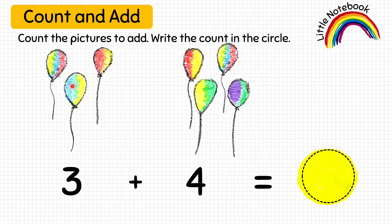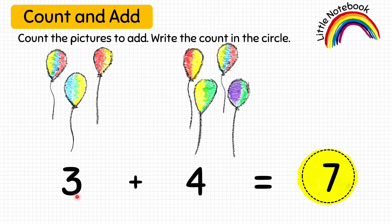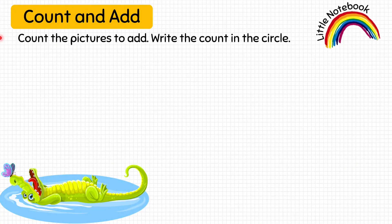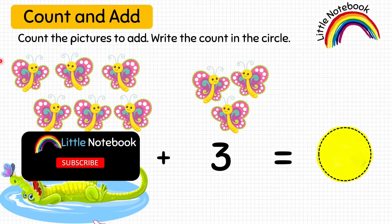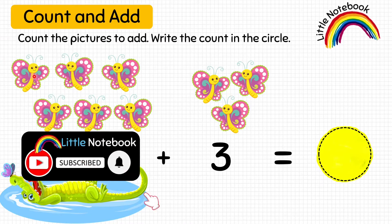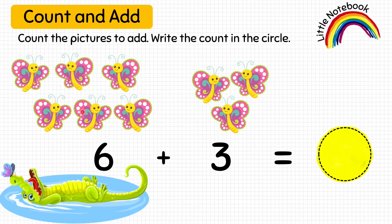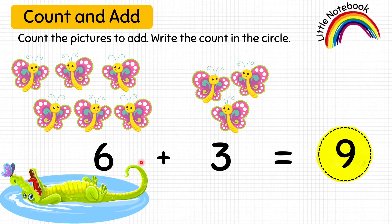Let's do some more examples. Count: one, two, three, four, five, six, seven. Write seven — so three plus four equals seven. Now the next picture is of butterflies. Let's count them: one, two, three, four, five, six, seven, eight, nine. Write nine in this circle — so six plus three equals nine.